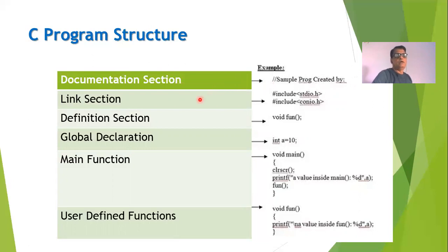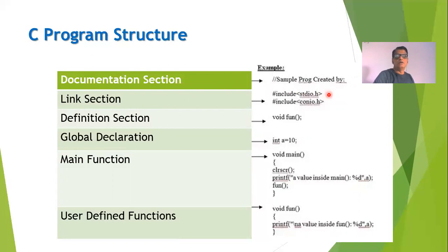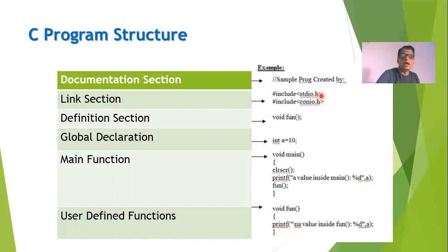The second section is the link section. Many times we need to use standard library functions within our program. These standard library functions are available in the form of header files. Whenever you use a certain function, the corresponding header file needs to be included within your program. For example, if I want to use the printf function, I need to include the standard input output header file stdio.h via the link section, so that the compiler will link this file and the function will get executed.